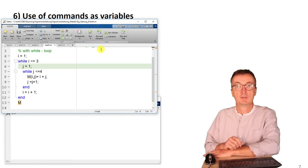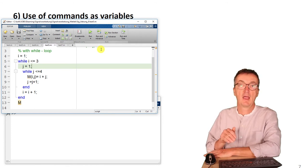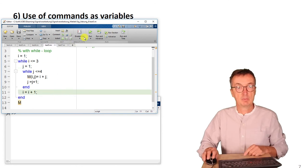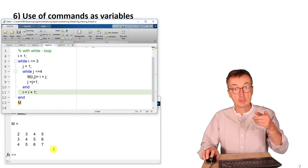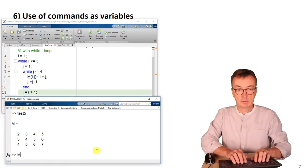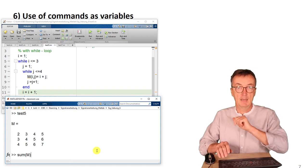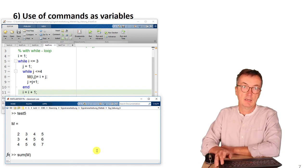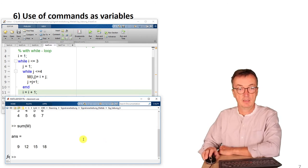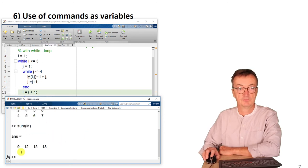Another quite common problem occurs when a command name is used as a variable. For instance, let's take this program again, generate this matrix m and let's say we would like to have calculated the sum of m. In this case, the sum hasn't been used as a variable. So that gives the, it sums up each column. So it gives four numbers.